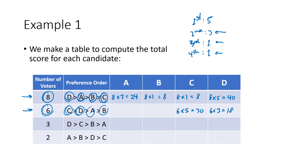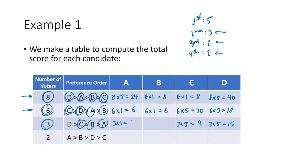A and B are in third and fourth place on those six ballots, so that's six times one and six times one. Then three ballots with D in first place — three times five is 15. C is in second place worth three points, so that's three times three, which is nine. A and B are in third and fourth place again, so three times one and three times one. You're multiplying the number of ballots times the number of points that a candidate gets for having that ranking on that ballot.